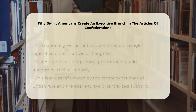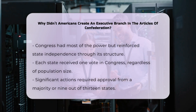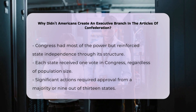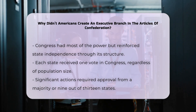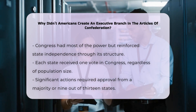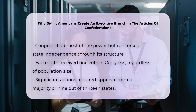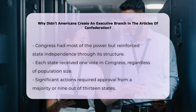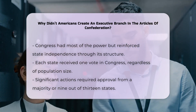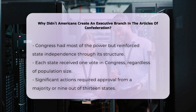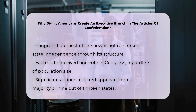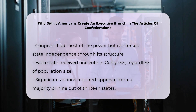Under the Articles, the legislative body, Congress, held most of the power, but it was structured in a way that reinforced state independence. Each state had one vote in Congress, regardless of its population, and any significant actions required the approval of a majority or, in some cases, nine out of the 13 states. The lack of an executive branch meant that there was no single figure or office to enforce federal laws, conduct foreign policy, or manage the day-to-day affairs of the government.